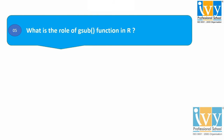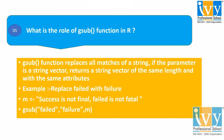Moving to the fifth question: What is the role of the gsub function in R? The gsub function replaces all the matches of a string. If the parameter is a string vector, then it will return a string vector of the same length and with the same attributes.